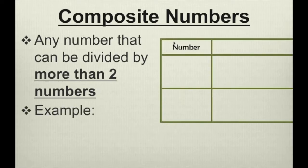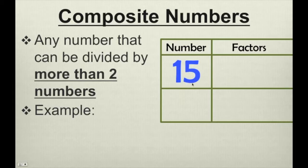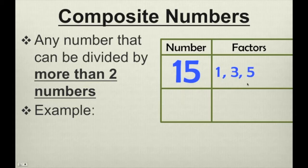We'll list the number and their factors. Let's take the number 15. What numbers can go into 15 evenly? In other words, what are the factors of 15? Well, the factors of 15 are 1, 3, 5, and 15.